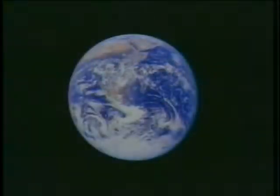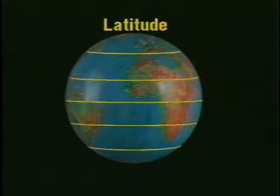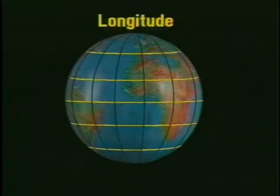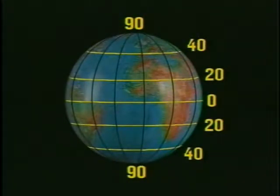You can do this by using lines of latitude, which are parallel to the earth's equator, and lines of longitude, which run from the north pole to the south pole. Using the equator as a starting point, we can plot lines of latitude north and south from zero degrees at the equator to 90 degrees at the poles.